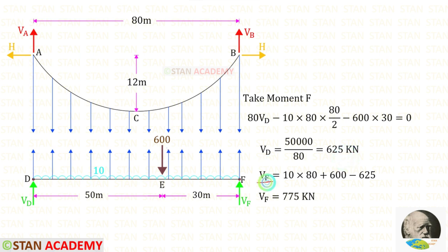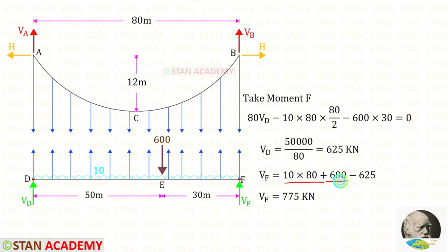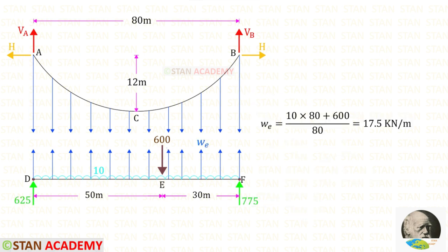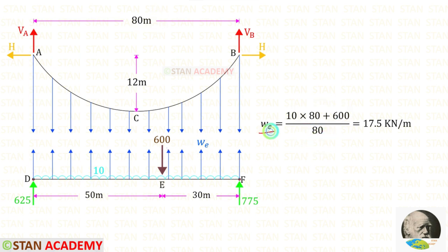To find VF, we have to subtract VED from the total load. For the uniformly distributed load the distance is 80, so 10 into 80, and then we have the concentrated load of 600. Adding these two gives the total load; total load minus VED gives VF. Now let us find the equivalent uniformly distributed load WE by dividing the total load by the span of 80. For WE we will get 17.5 kN per meter.